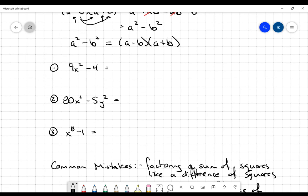So what does that look like? Well, if I can recognize that I've got two terms, and each term is a perfect square, then all I really have to do is break these things apart. So 9x squared minus 4, 9x squared is 3x squared, it's a perfect square.